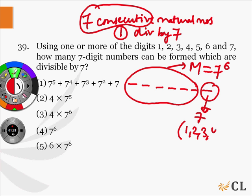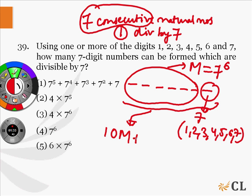1, 2, 3, 4, 5, 6, 7. Also, this 7-digit natural number can be written in the form of 10m plus the units digit.